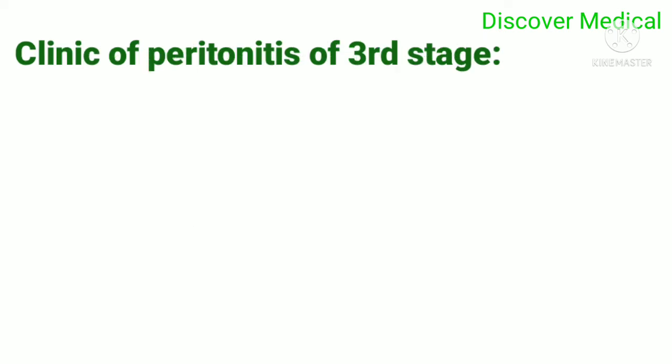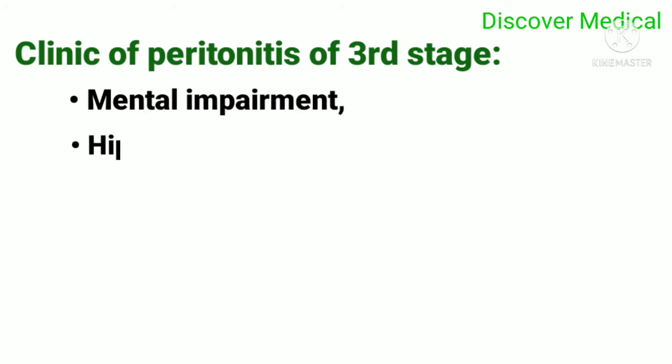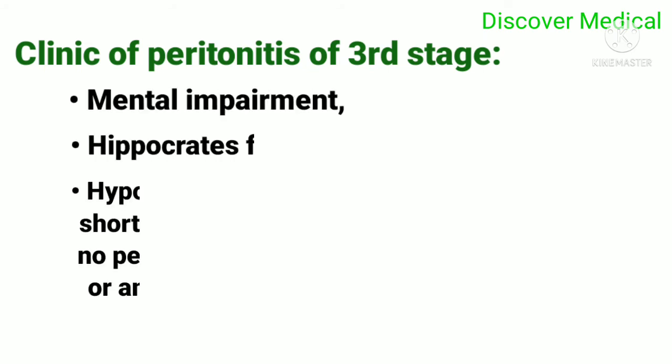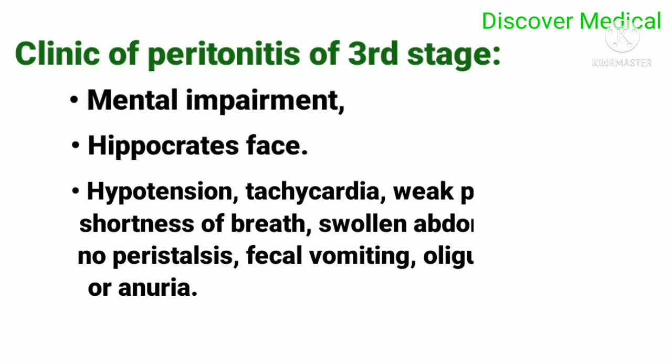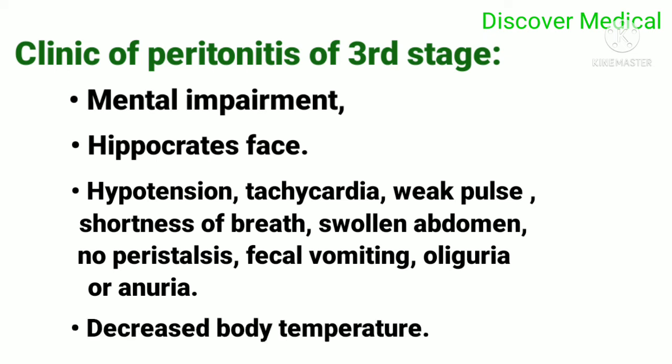Clinic of peritonitis of the third phase: mental impairment, hypothermic phase, hypotension, tachycardia, weak pulse, shortness of breath, swollen abdomen, no peristalsis, fecal vomiting, oliguria or anuria, and decreased body temperature.